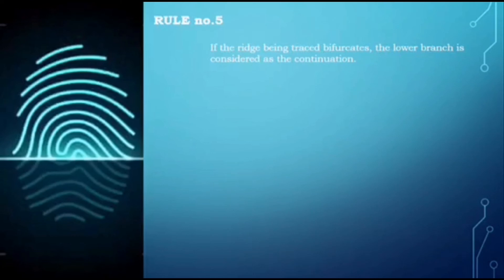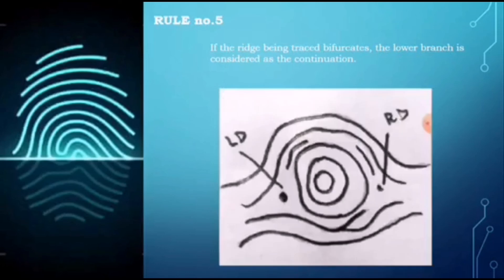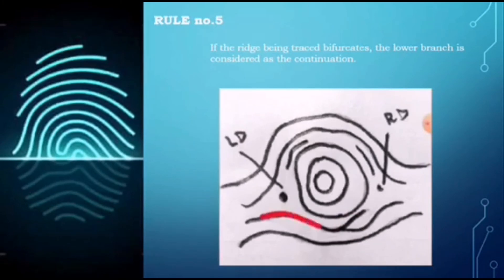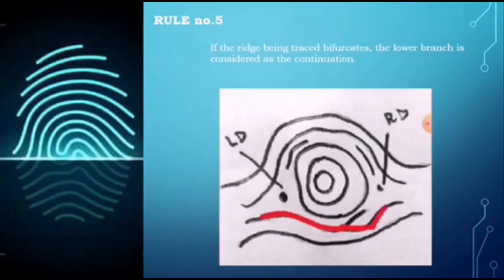Rule number five: if the ridge being traced bifurcates, the lower branch is considered as the continuation. This is where the ridge bifurcates — according to rule five, the lower branch is considered the continuation. We trace along the lower branch until we reach the right delta.